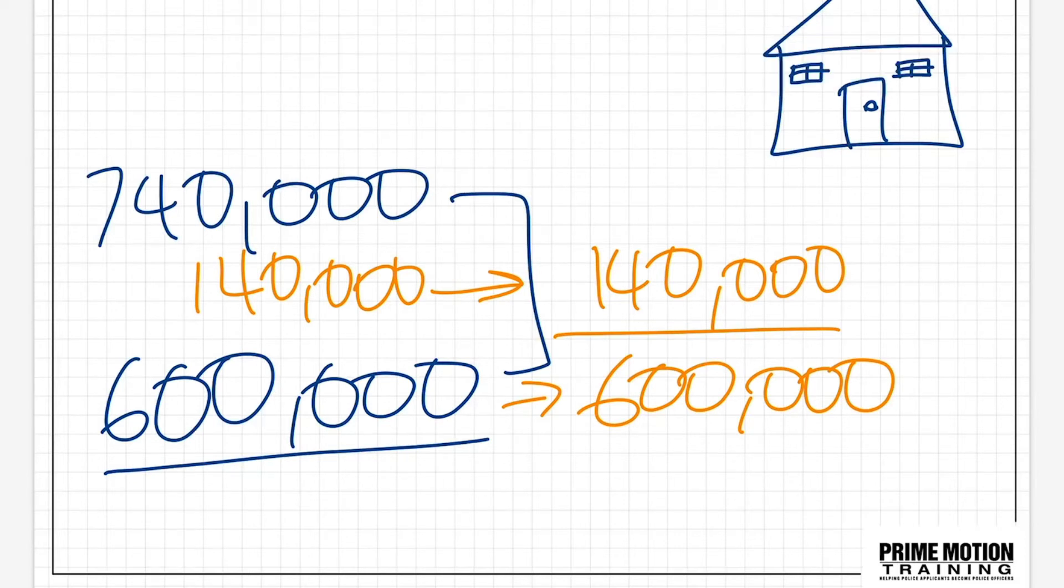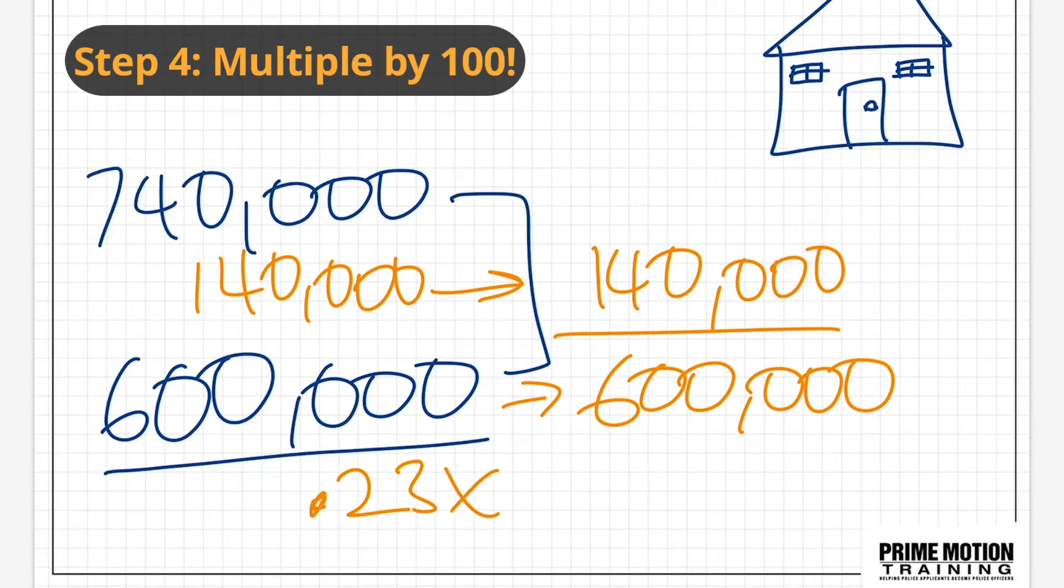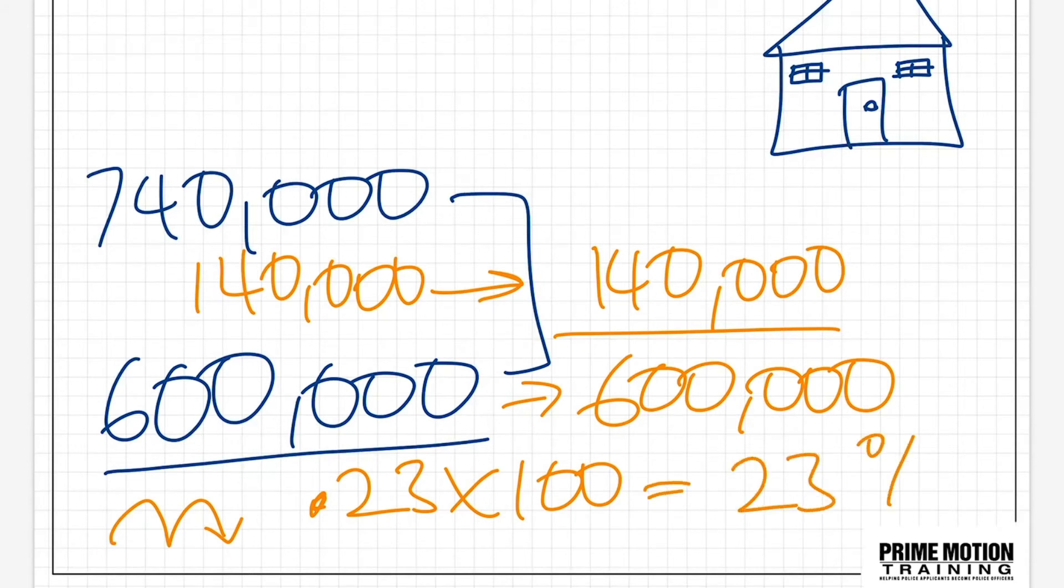Now, when we do that calculation, we're going to end up with a decimal of 0.23. If we multiply that decimal by 100, which is simply moving the decimal place two places to the right, we'll end up with the number 23, which we know now is a percentage. So 23% is the percentage change between the two amounts.